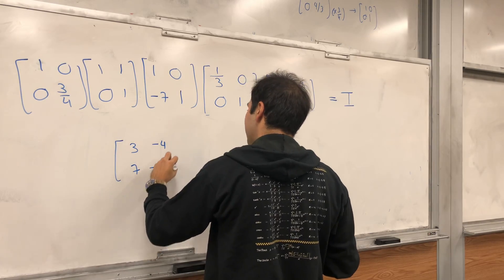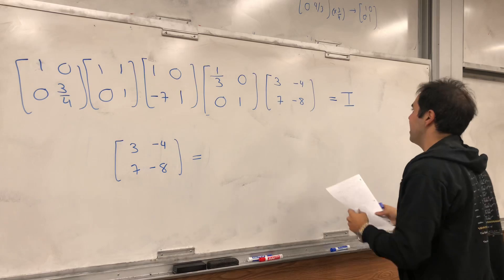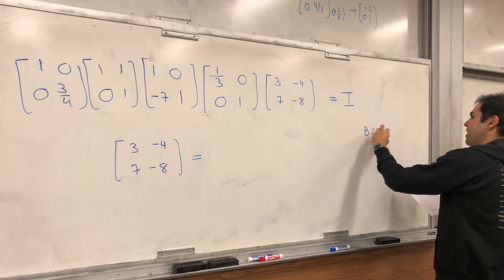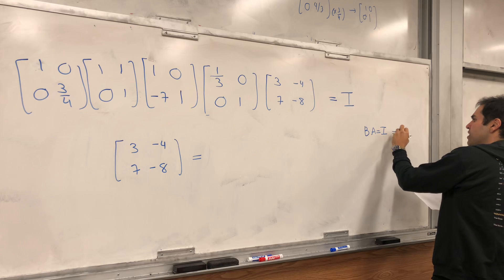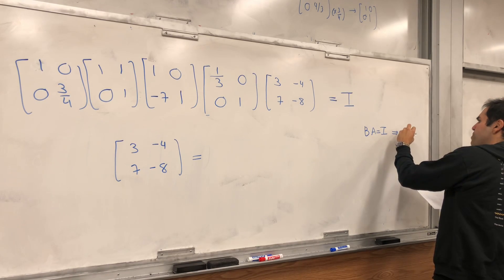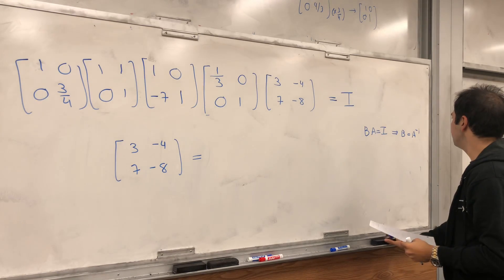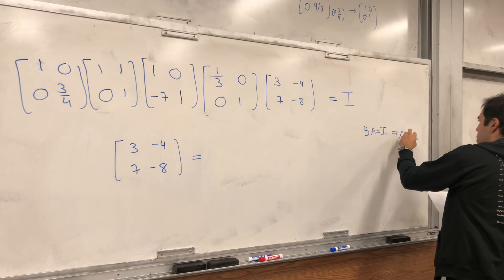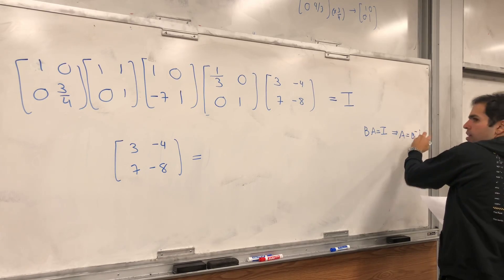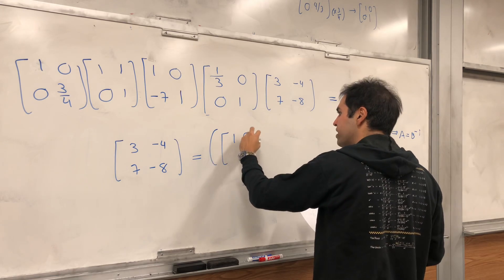Because, this times this is the identity. So, BA is the identity. And, if A is squared, this means that B equals to A inverse. I guess, A is B inverse. Sorry. It's the other way. By the way. Which means, this matrix equals to this whole matrix inverse.